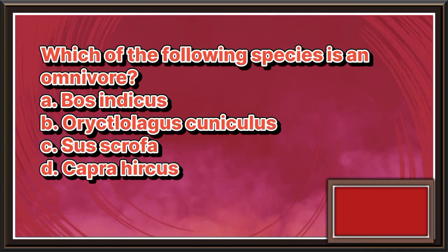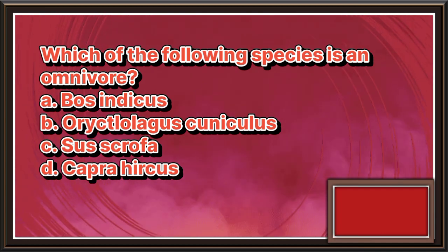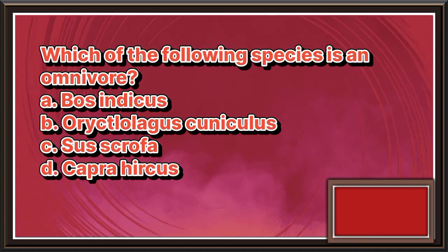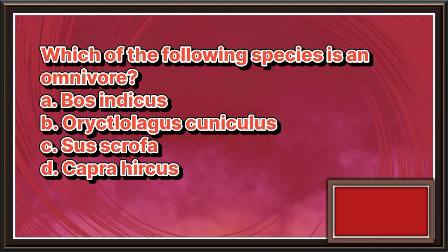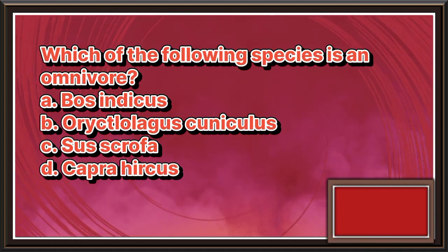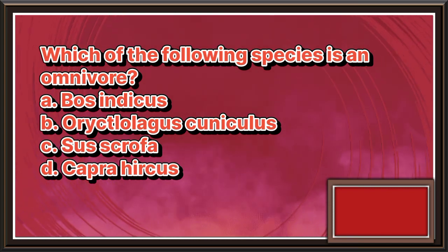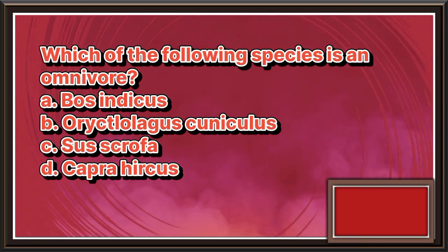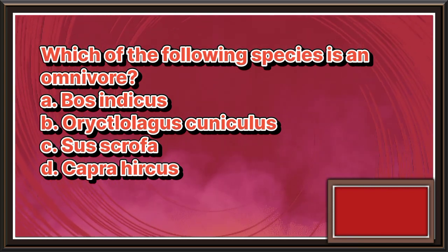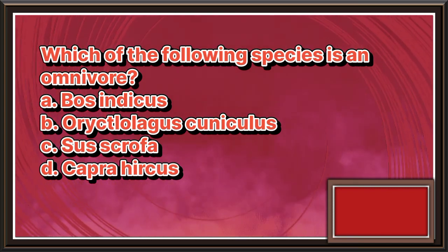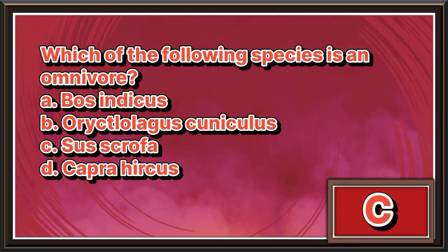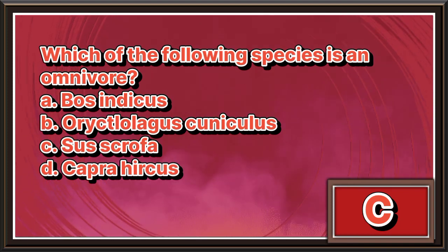Which of the following species is an omnivore? A. Bos indicus. B. Oryctolagus cuniculus. C. Sus scrofa. D. Capra hircus. The answer is letter C.